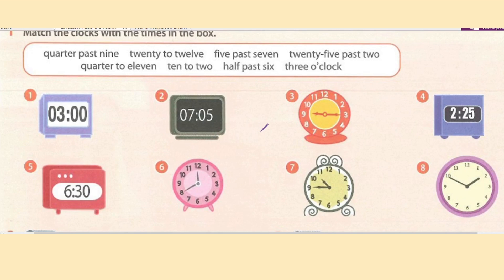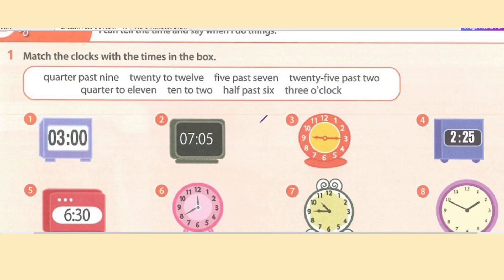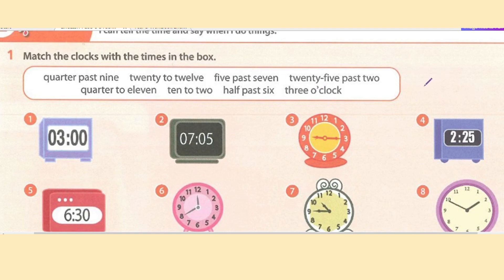This is an exercise from the textbook. The instruction says: match the clocks with the times in the box. Number one shows a digital clock — a digital clock has no hands; it shows time automatically. The number shown is three, so the answer is three o'clock.